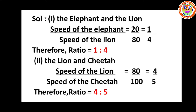Speed of the elephant is 20 km/h and speed of the lion is 80 km/h. So speed of elephant divided by speed of lion equals 20 divided by 80. Cancelling: 20 by 80 simplifies — cancel zeros to get 2 by 8, then divide by 2 to get 1 by 4. Therefore the ratio is 1 is to 4.